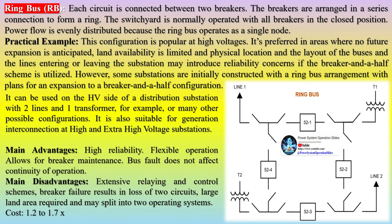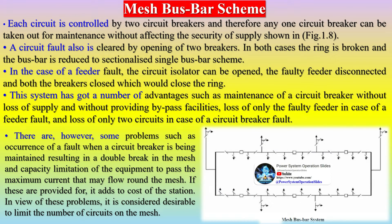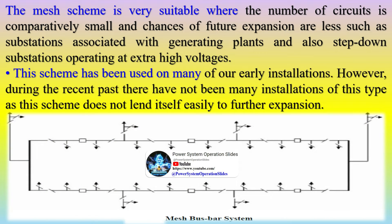In the mesh busbar scheme, each circuit is controlled by two circuit breakers, and therefore any one circuit breaker can be taken out for maintenance without affecting the security of supply. A circuit fault is also cleared by the opening of two breakers. In both cases the ring is broken and the busbar is reduced to a sectionalized single busbar scheme. In the case of a feeder fault, the circuit isolator can be opened, the faulty feeder disconnected, and both breakers closed to restore the ring. This system offers maintenance of a circuit breaker without loss of supply, loss of only the faulty feeder in a feeder fault, and loss of only two circuits in case of a circuit breaker fault.